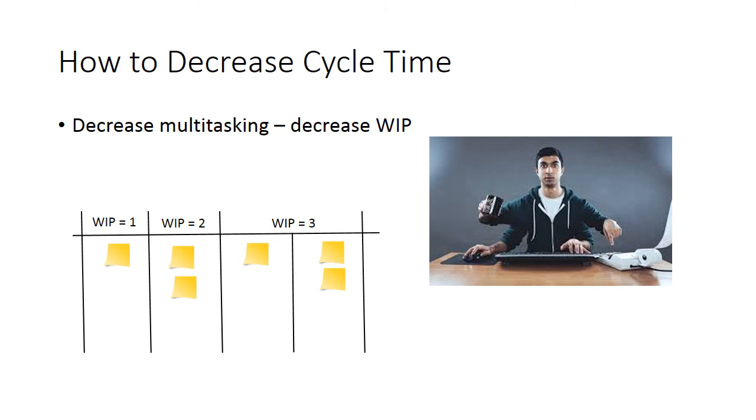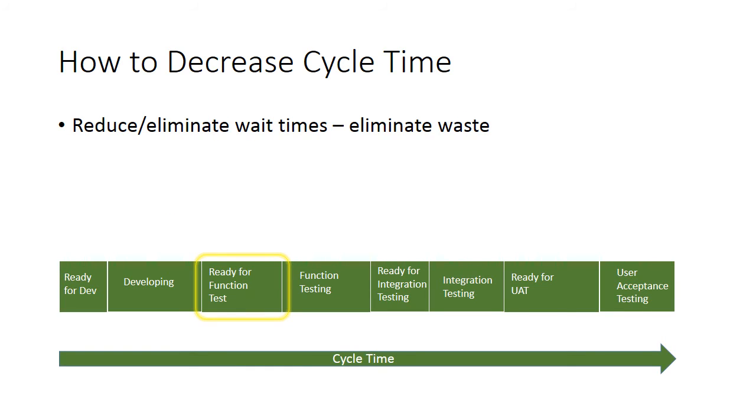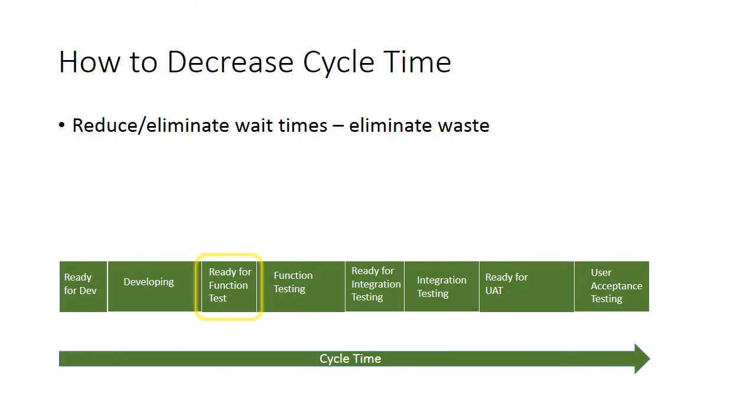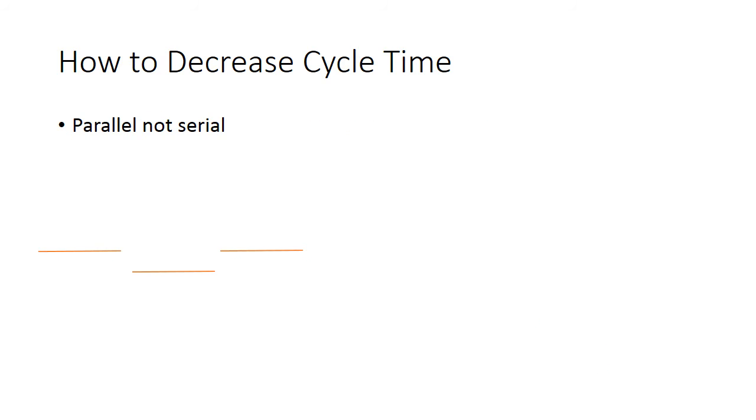Visibility is your friend here. By making wait states visible, we can focus on reducing the time spent in wait states, focusing on eliminating waste. We may also be able to work on items in parallel rather than serially. For example, we might structure dependencies to minimize end-to-end cycle time.